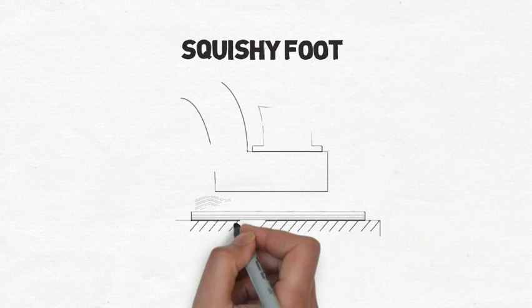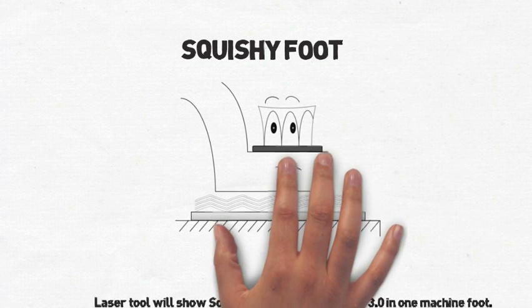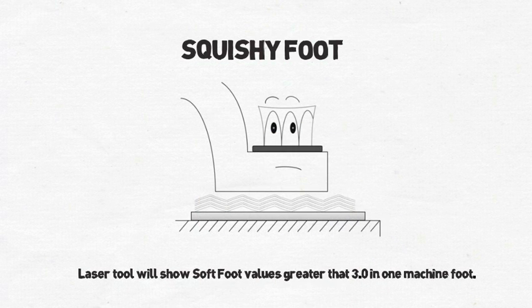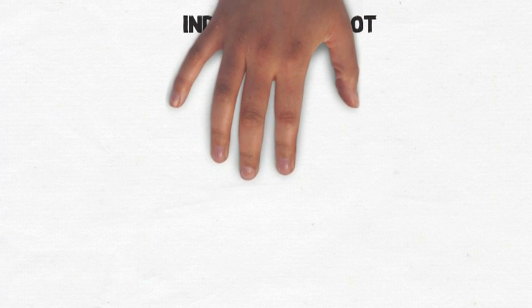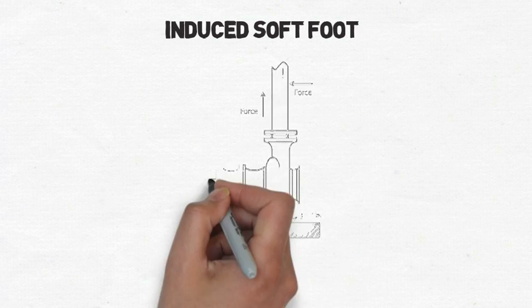The laser readings will show one foot out of tolerance. Soft foot can also be induced by an external source applying force onto the machine frame, usually pipe or conduit strain.